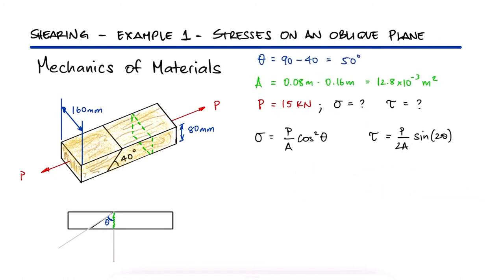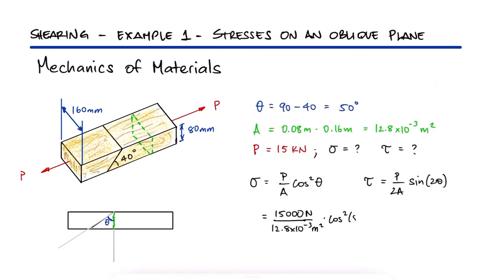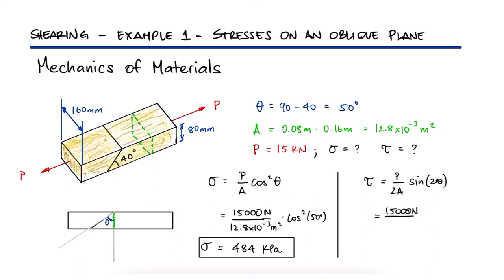With these three values, we can find the normal stress of 484 kPa and the shearing stress of 577 kPa.